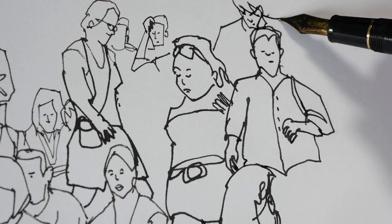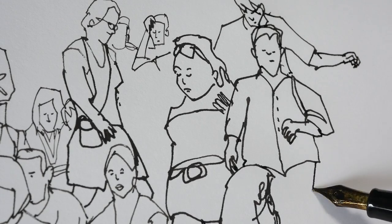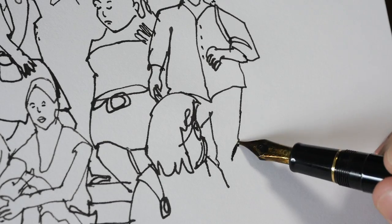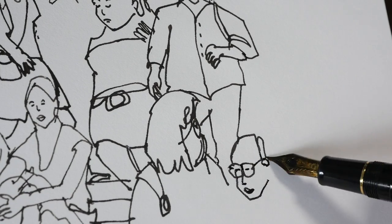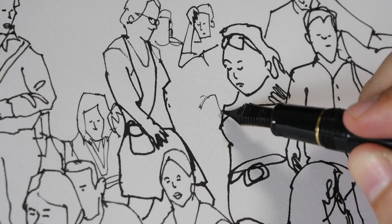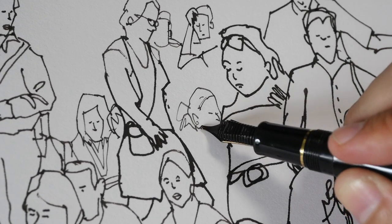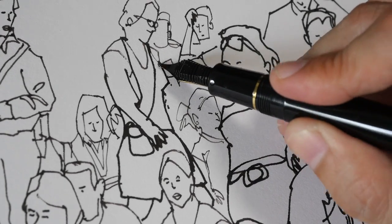By the way, the fountain pen that I'm using right now is the Sailor fountain pen with zoom nib. I like this nib because it can produce very thick lines and it's great when I'm drawing this kind of sketching for video for my camera to capture. The ink that I'm using in this fountain pen is the Noodler's black ink.